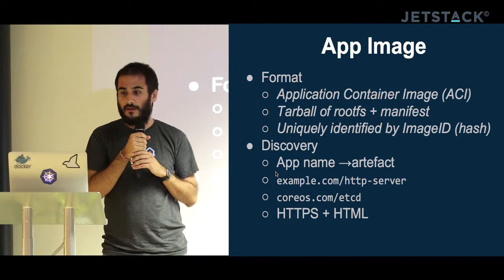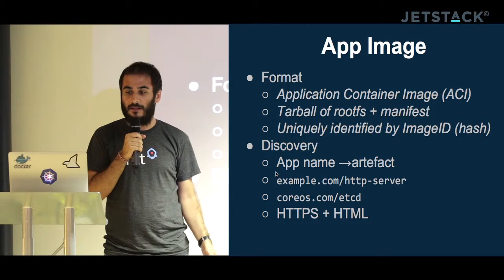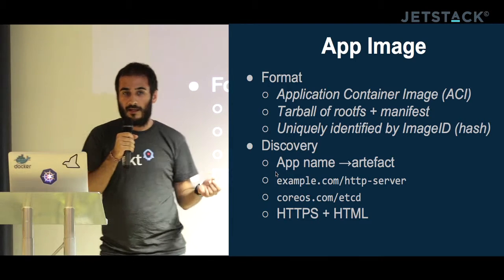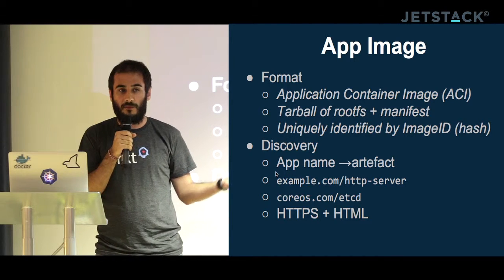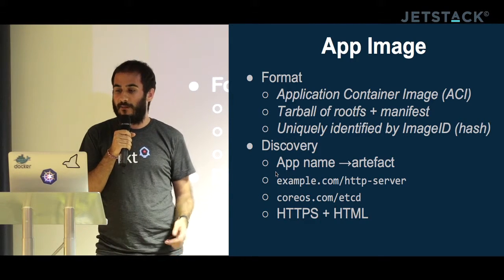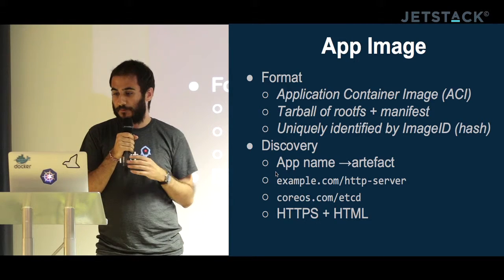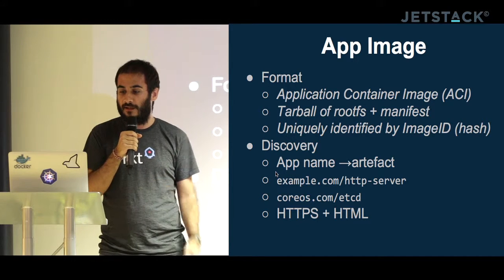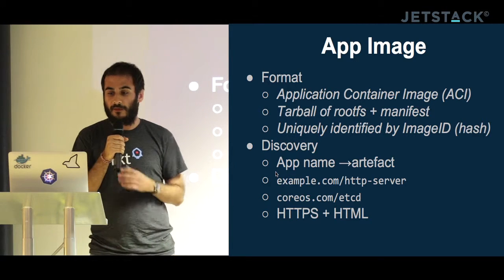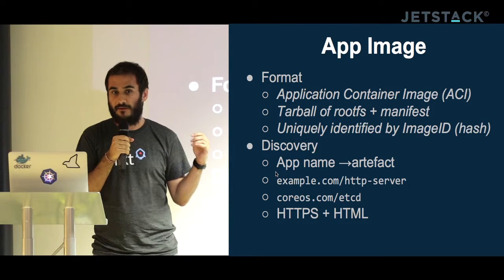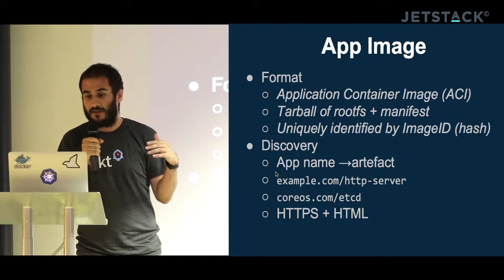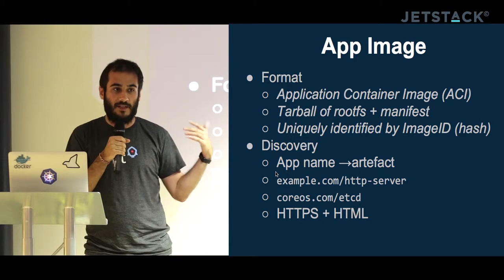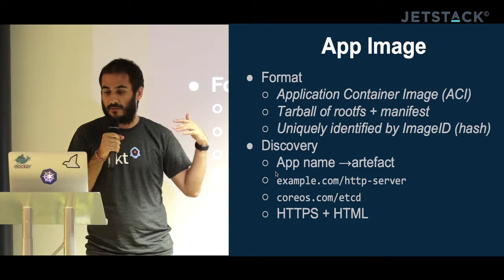The main parts of the spec are: the format, called Application Container Image or ACI. It's basically just a tarball with the rootfs of the container and a manifest that describes what's going to run and the restrictions you want. One of the goals was to have content-addressable images, uniquely identified by an image ID which is a hash of the image.